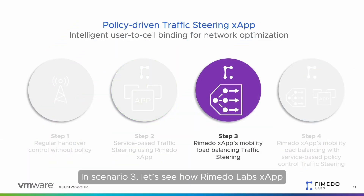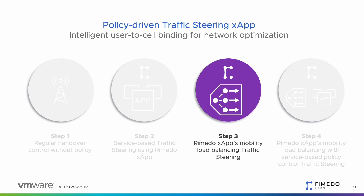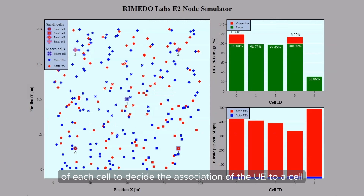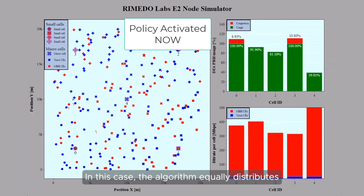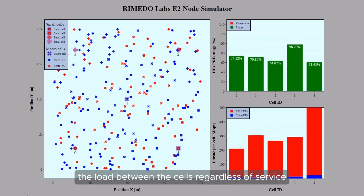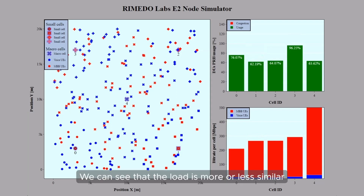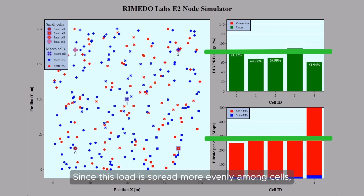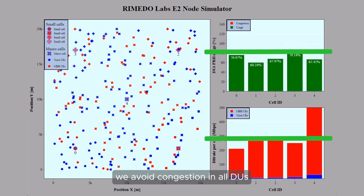In scenario three, let's see how Remedo Labs X-App applies mobility load balancing only to steer traffic. In this scenario, the X-App only considers the current load of each cell to decide the association of the UE to a cell. The algorithm equally distributes the load between the cells regardless of service. We can see that the load is more or less similar between all cells, and since this load is spread more evenly among cells, we avoid congestion in all DUs.